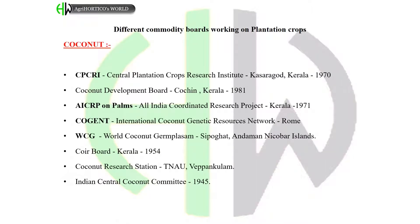For coconut: CPCRI — Central Plantation Crops Research Institute at Kasaragod, Kerala, in 1970. Coconut Development Board at Kochi, Kerala, in 1981. AICRP — All India Coordinated Research Project at Kerala in 1971. COGENT — International Coconut Genetic Resources Network at Rome. WCGN — World Coconut Germplasm at Car Nicobar and Andaman & Nicobar Islands. Coir Board at Kerala in 1954.